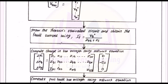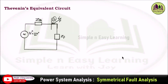The next step: draw the Thevenin equivalent circuit and obtain the fault current using the corresponding formula. For the given single line diagram, after analyzing the reactance diagram, we draw the Thevenin equivalent circuit to find the fault current. The fault location is at bus 4, with Thevenin impedance in series with the Thevenin voltage source, and the fault impedance Zf connected at the fault point.